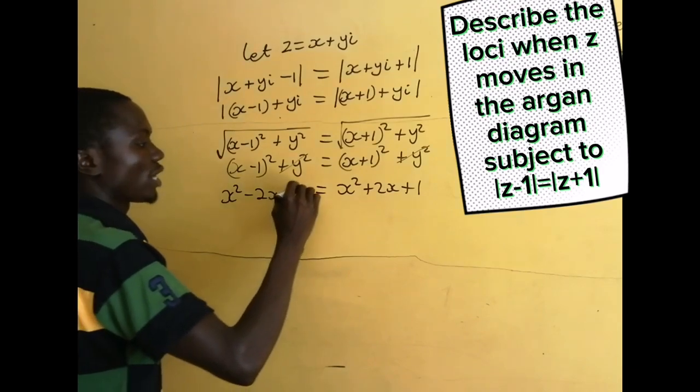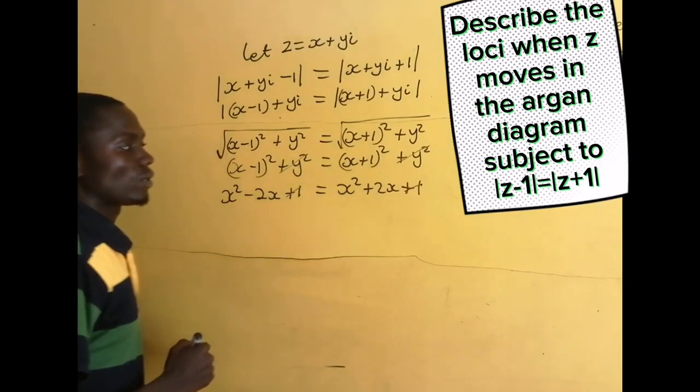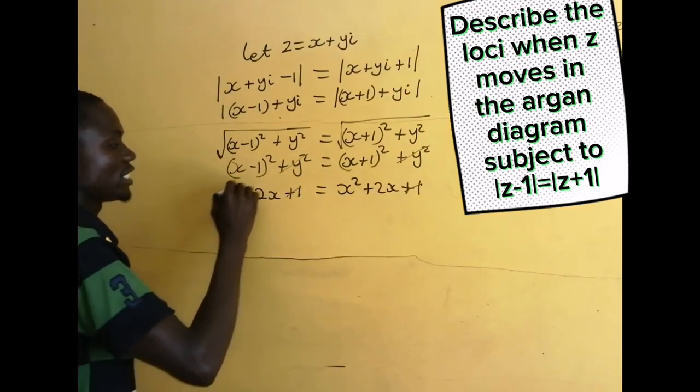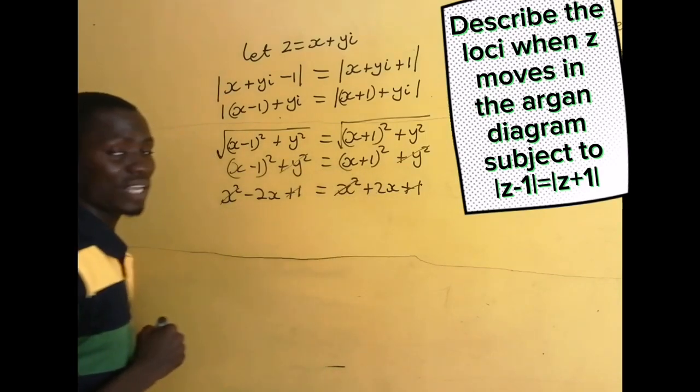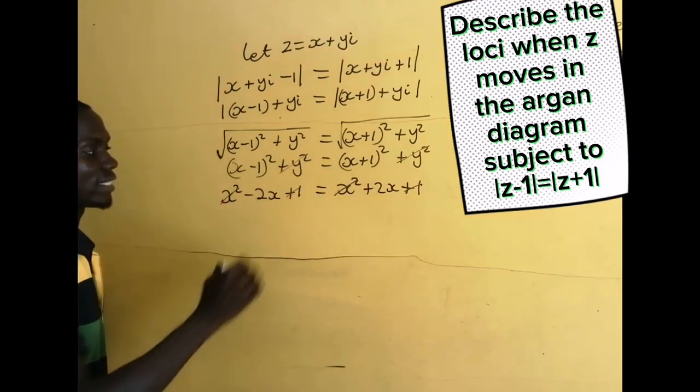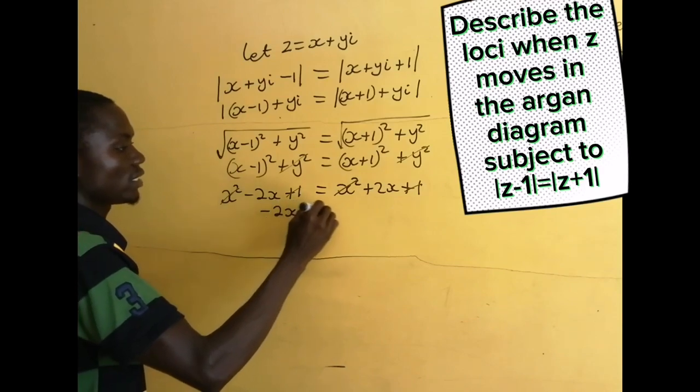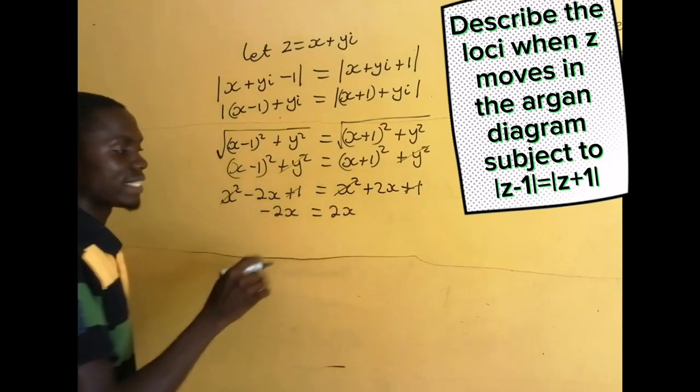Now, positive 1 will cancel positive 1 on the right-hand side. Positive x² will cancel positive x² on the right-hand side. So, -2x = 2x, which is impossible.